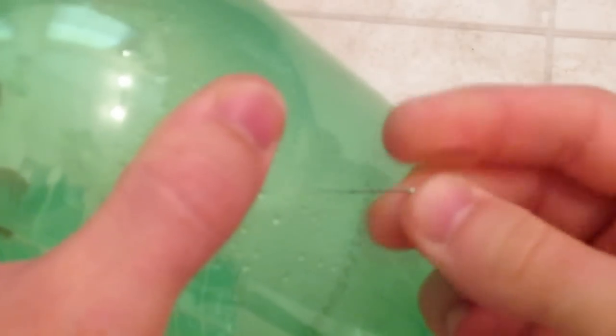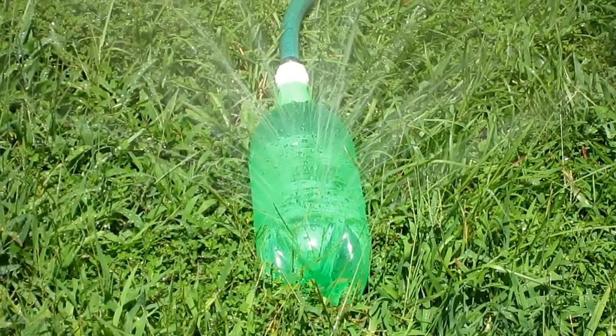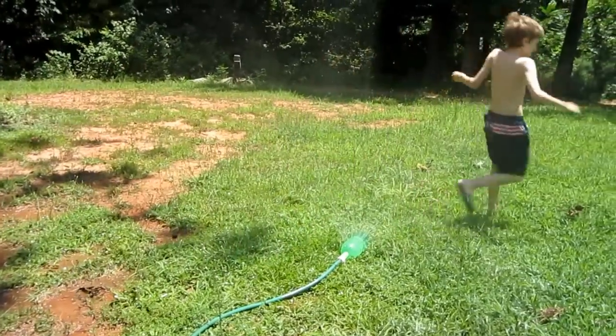Number 9. Using a small pin, make a bunch of random holes in one half of a bottle. Now attach it to a hose and you have a sprinkler for the grass. Or better yet, for the kids to stay cool in for the summer.